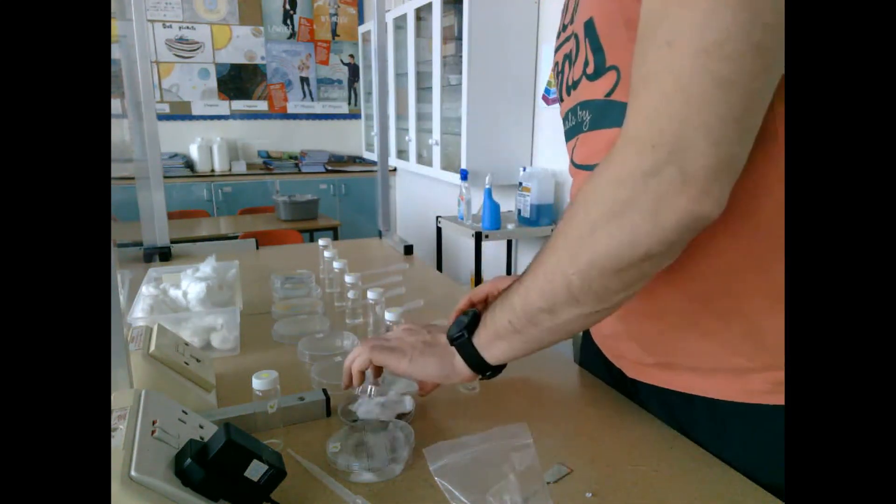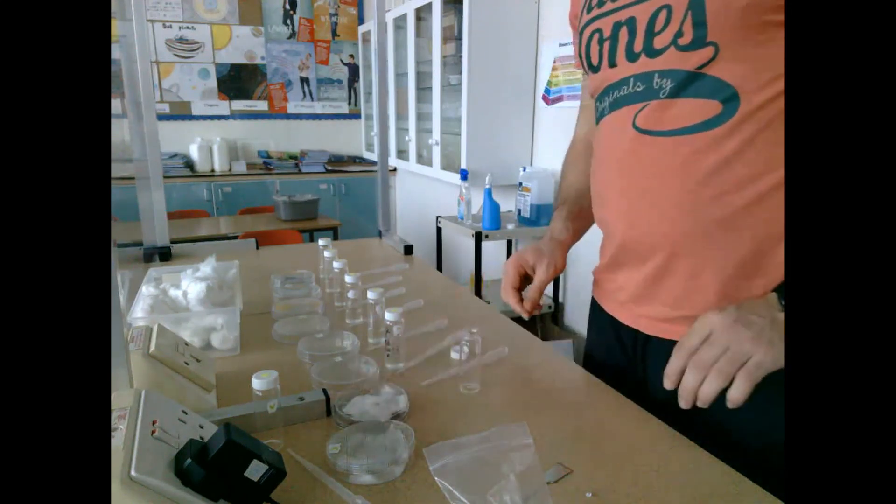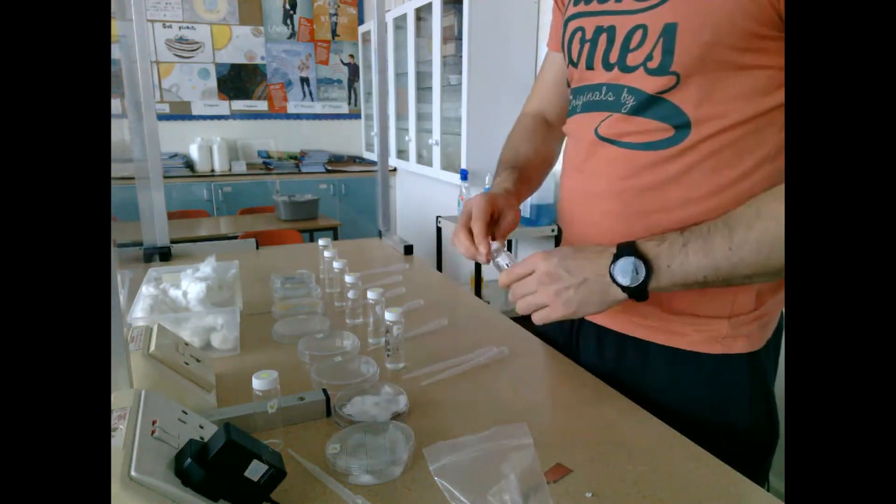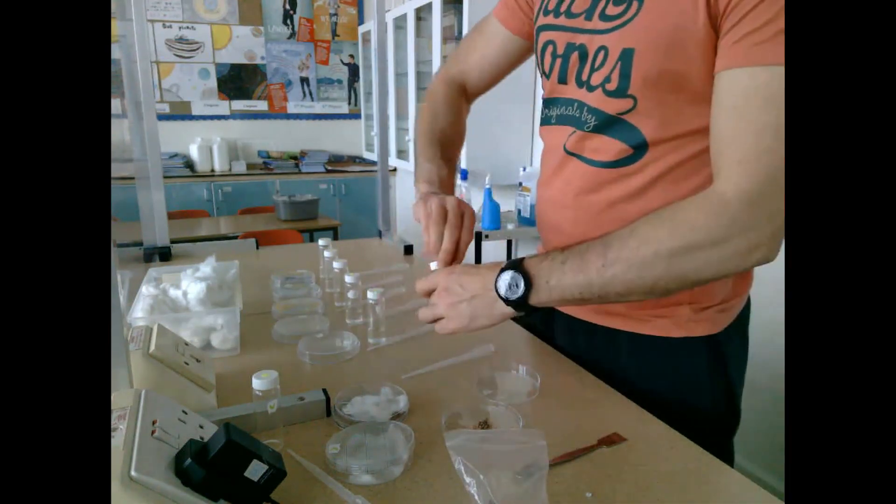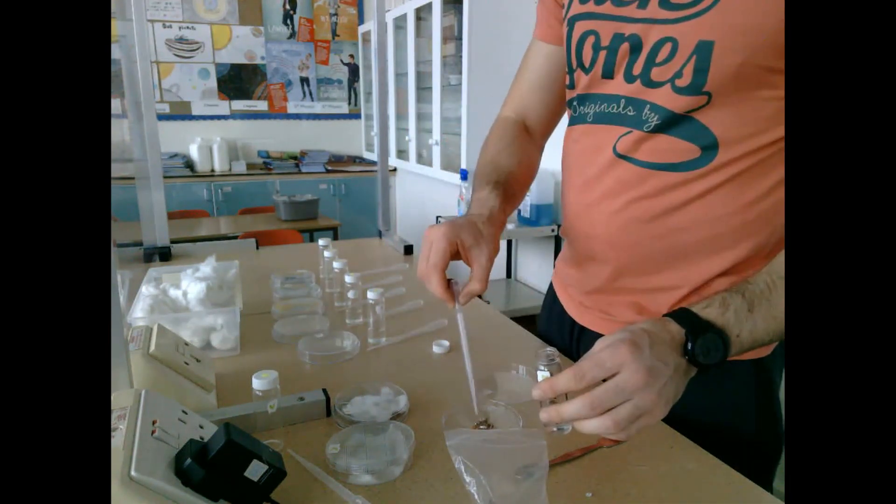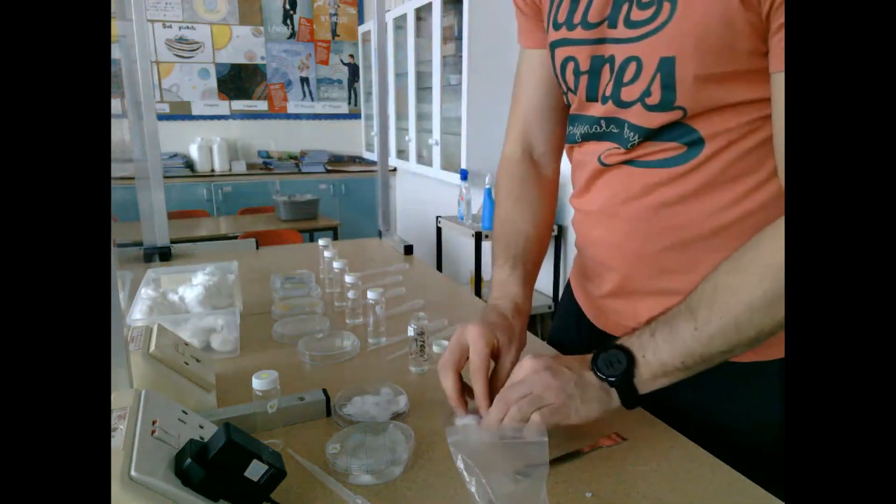I'm going to continue doing this for glass jars two, three, four, five, six, seven, and eight until every single petri dish has their radish seeds and their entire solution present on the cotton wool.